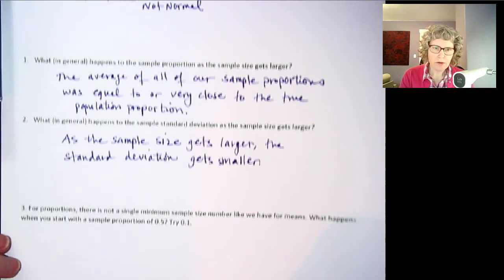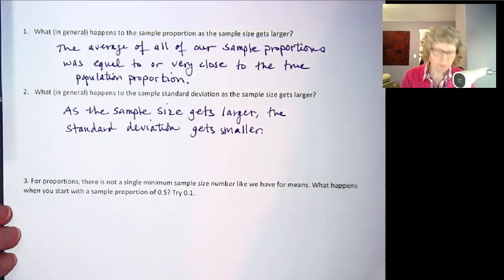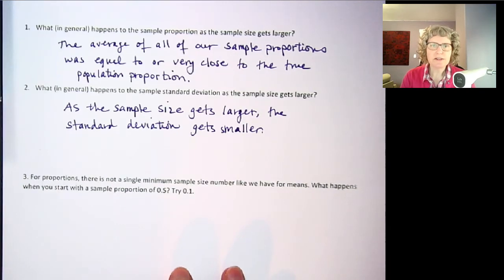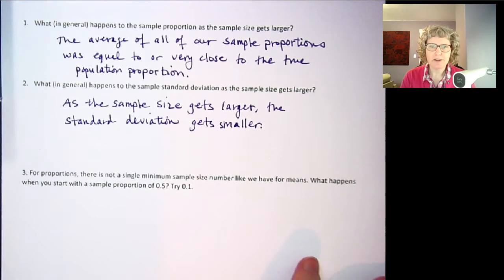Now there's one other thing I want to show you and that has to do with a sample size condition. Remember on our quantitative variable and we calculated means we saw that we had to get n greater than or equal to 30, to get a normal distribution. Well one thing that's different about proportions is it's not quite that cut and dried. So I want to show you something.